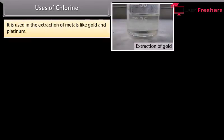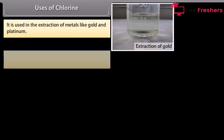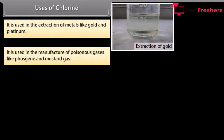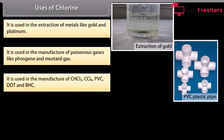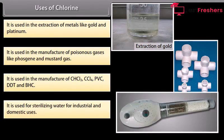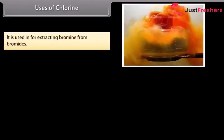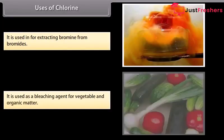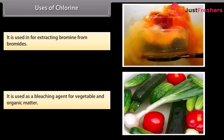The important uses of chlorine are: it is used in the extraction of metals like gold and platinum; in the manufacture of poisonous gases like phosgene and mustard gas; in the manufacture of CHCl3, CCl4, PVC, DDT and BHC; for sterilizing water for industrial and domestic uses; for extracting bromine from bromides; and as a bleaching agent for vegetable and organic matter.